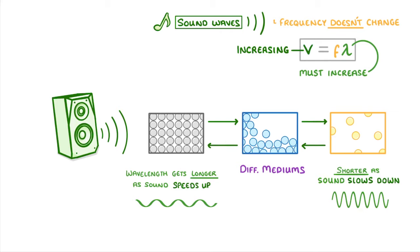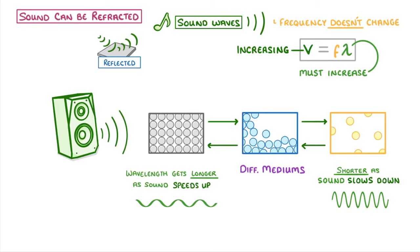The fact that sound changes speed as it moves from one medium to another means that sound can be refracted, just like light can. Sound can also be reflected and absorbed, with hard, flat surfaces reflecting most, which is what gives us echoes.